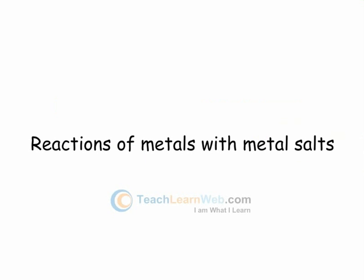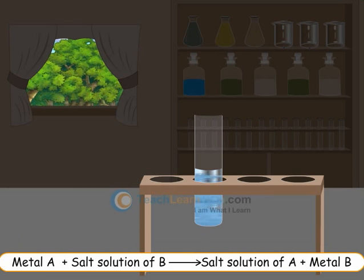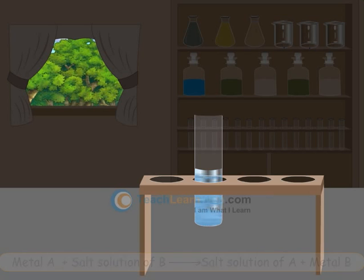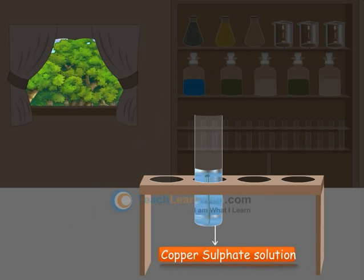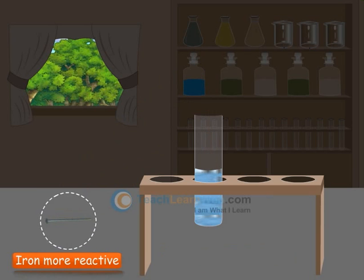Reactions of metals with metal salts: Reactive metals can displace less reactive metals from their compounds in solution. Metal A, when reacts with salt solution of B, gives salt solution of A and metal B. Iron nail, when placed in copper sulfate solution, acquires a layer of copper on it. Iron is more reactive and displaces less reactive copper.